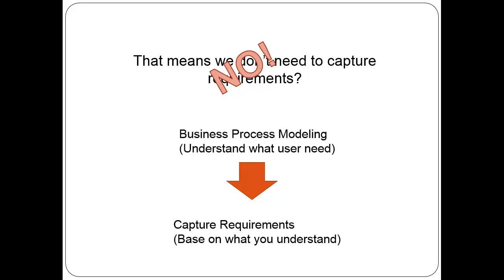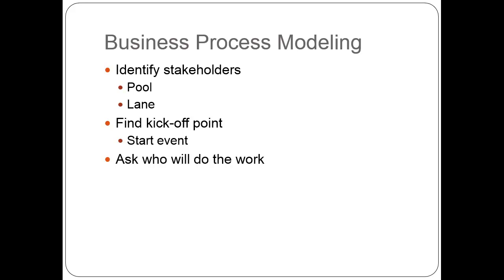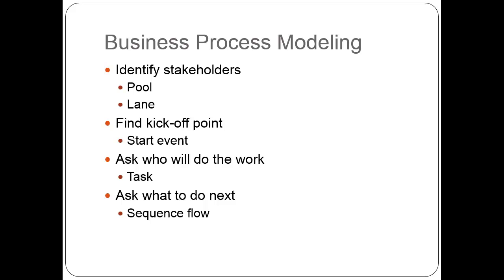In the rest of this demonstration, I'll show you how it works. We start with business process modeling. The first step is to identify the stakeholders, who become the pools or lanes in the business process. Then you find the kickoff point — where the process starts — which becomes the start event. Then you ask who will do the work, which becomes the task. Then you ask what to do next, which becomes the sequence flow.